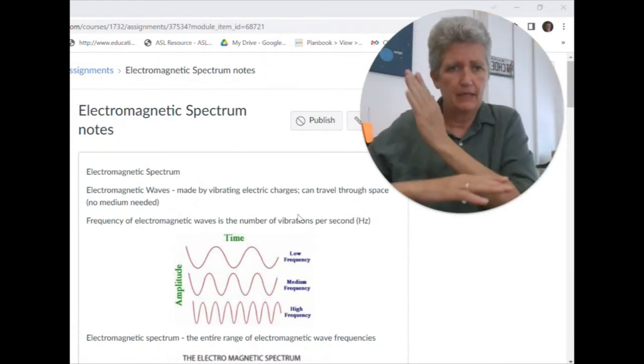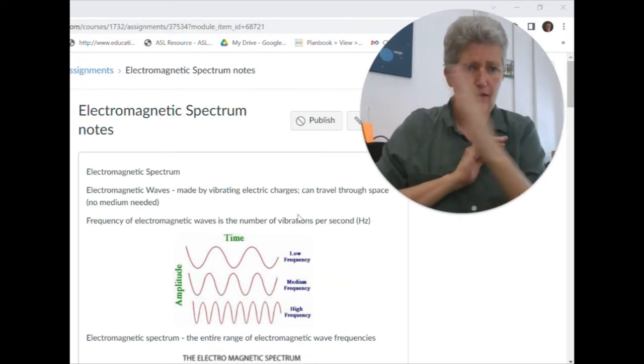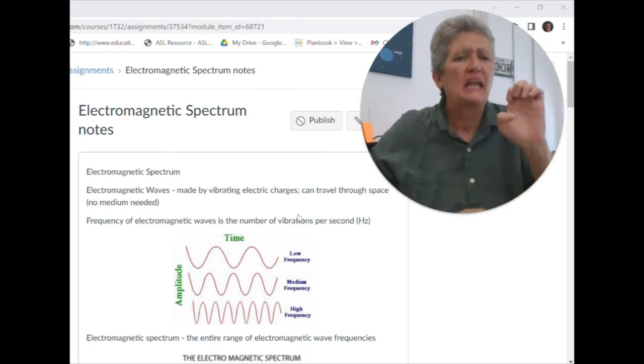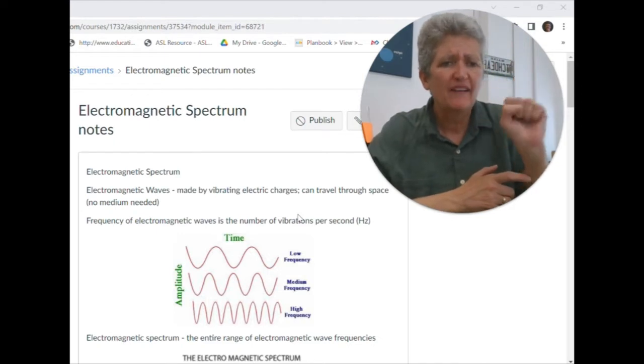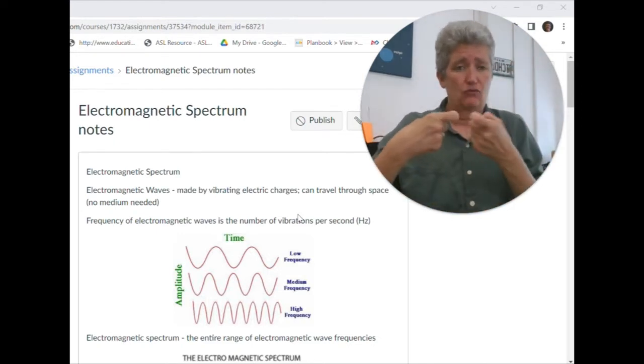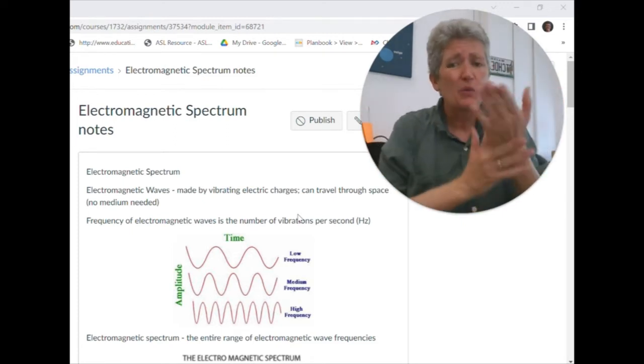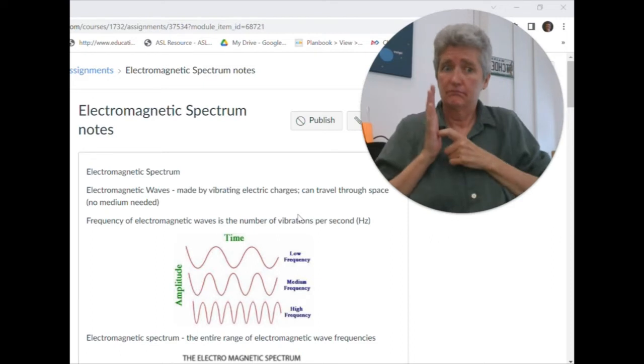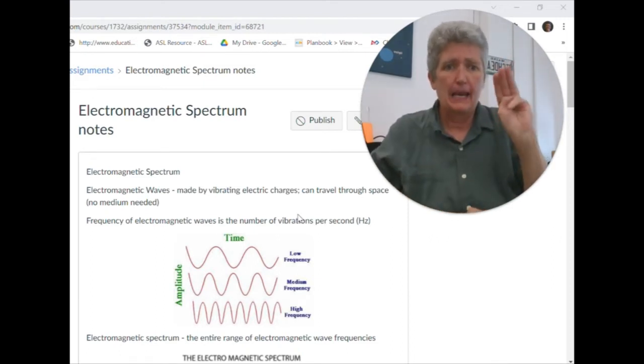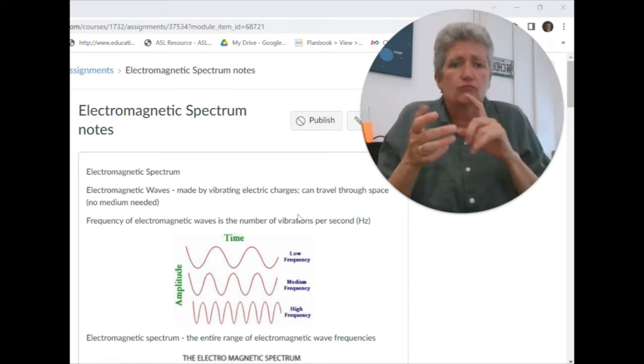All right, today we want to talk about the electromagnetic spectrum. I'm going to sign spectrum like that. It's a wave and it's made by vibrating electrical charges. EM waves can travel through anything. They don't need a medium. Do you remember that word? It means a material.